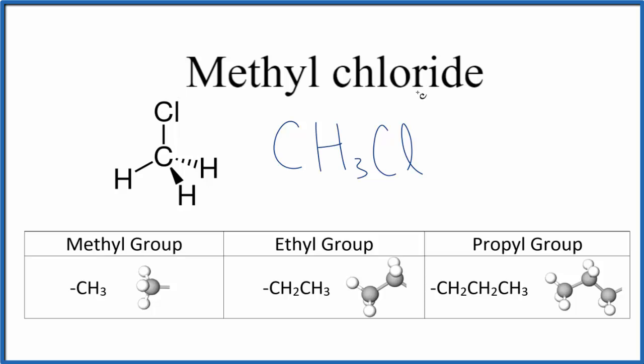So this is our methyl chloride. The official name, the more preferred name is chloromethane. It's chloromethane because we have methane, that'd be CH4, and we just replaced one of the hydrogens with a chlorine. So we have chloromethane.